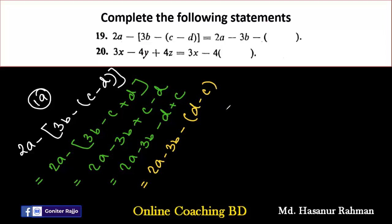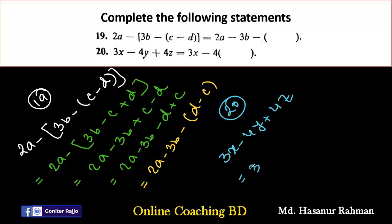Now number 20. Number 20 says: 3x minus 4(y minus z). So: minus 4y divided by minus 4 gives plus y, plus 4z divided by minus 4 gives minus z. Adding the bracket: 3x minus 4(y minus z). That is the answer of number 20.